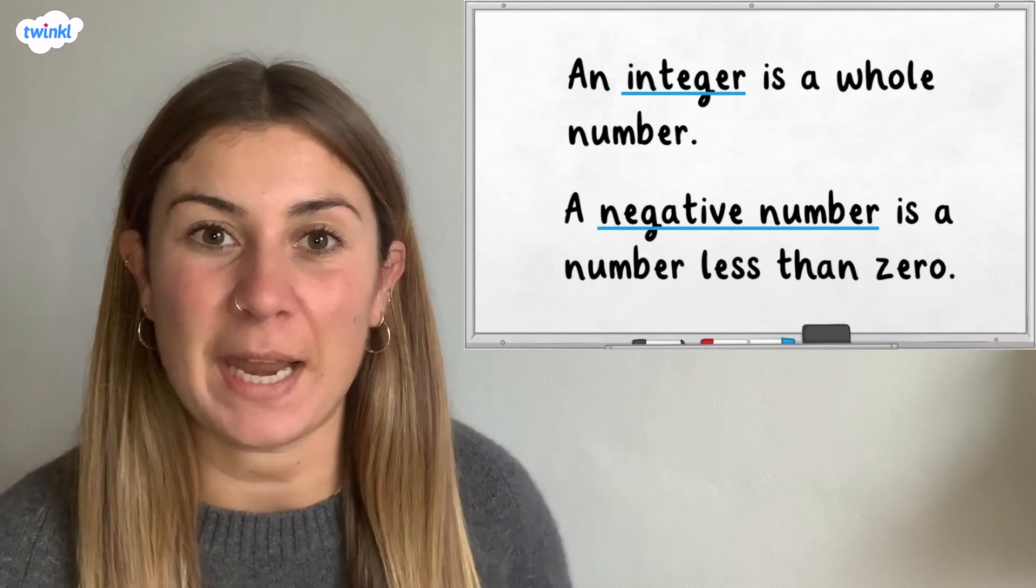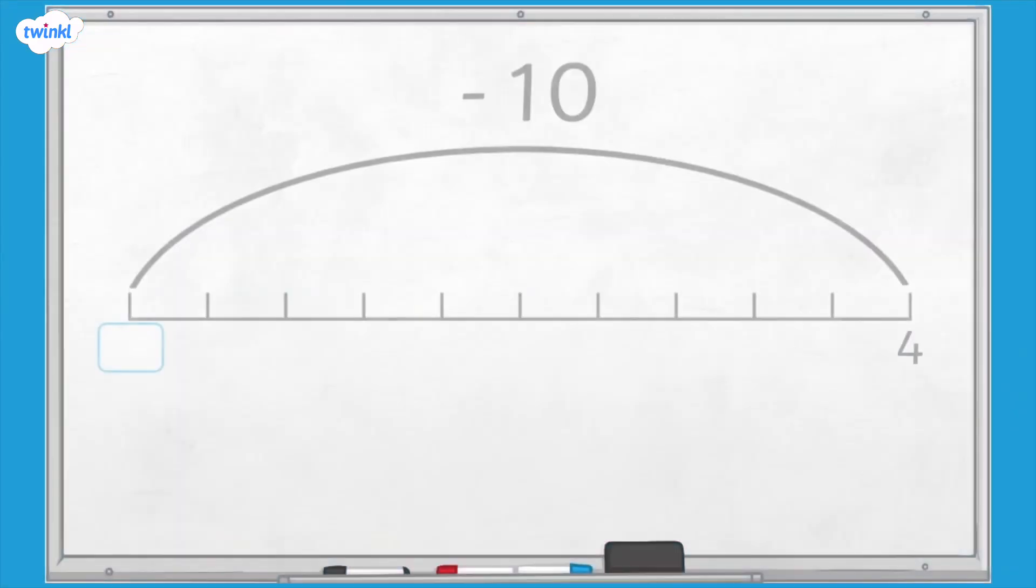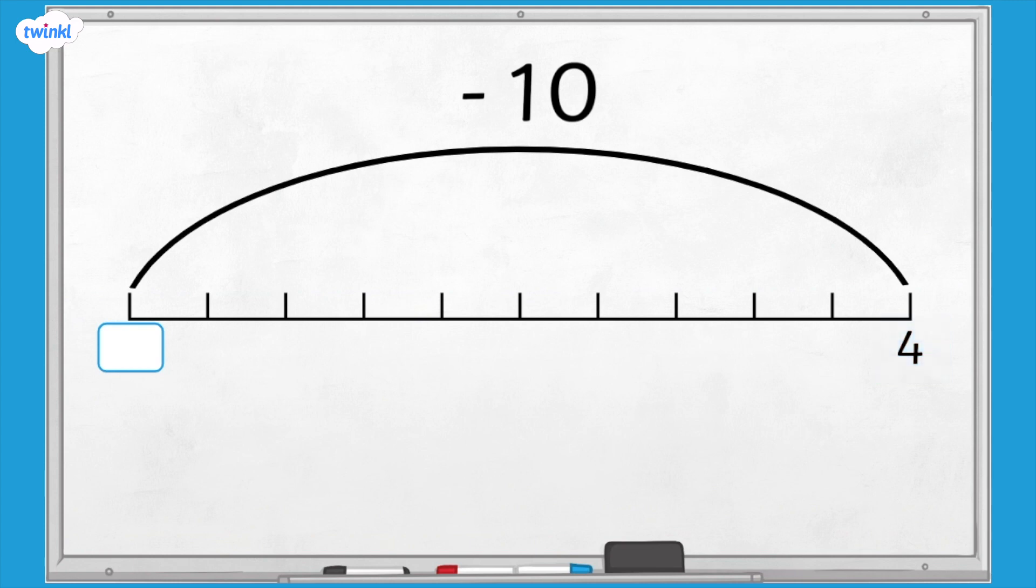Let's take a look at a number line. We know that this is 4, but how can we work out what the missing number is? From 4, we need to subtract 10 to find the missing number.